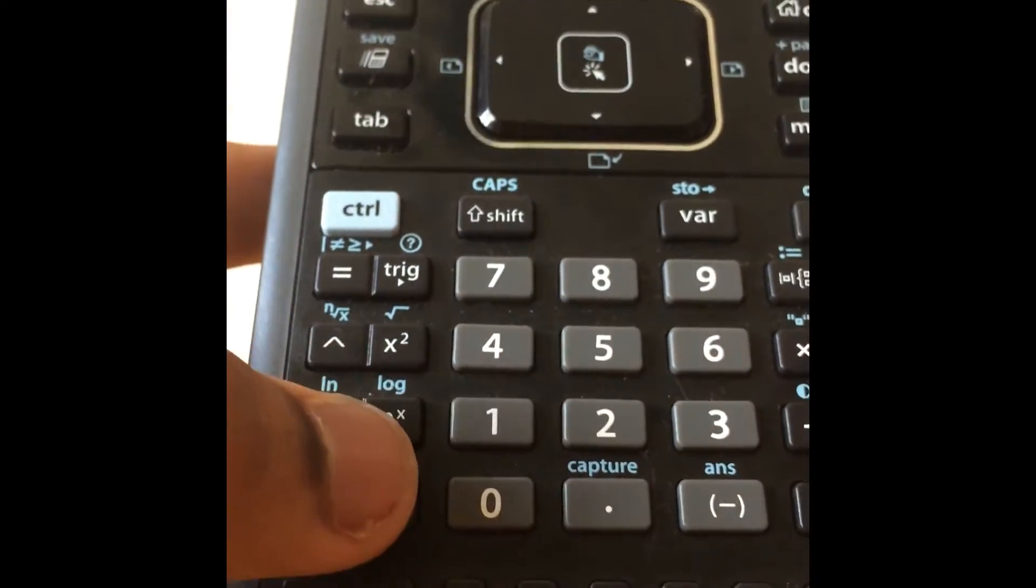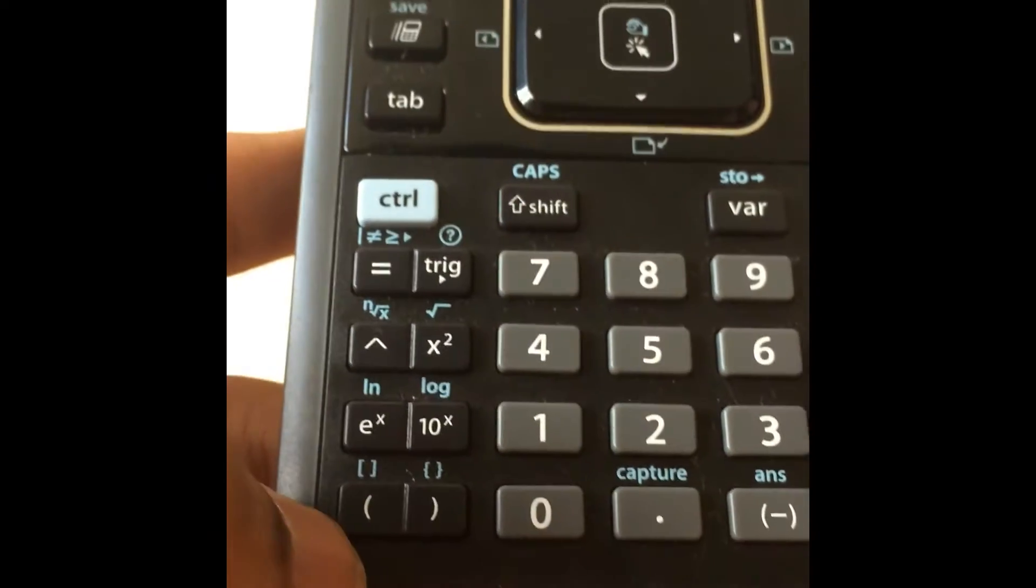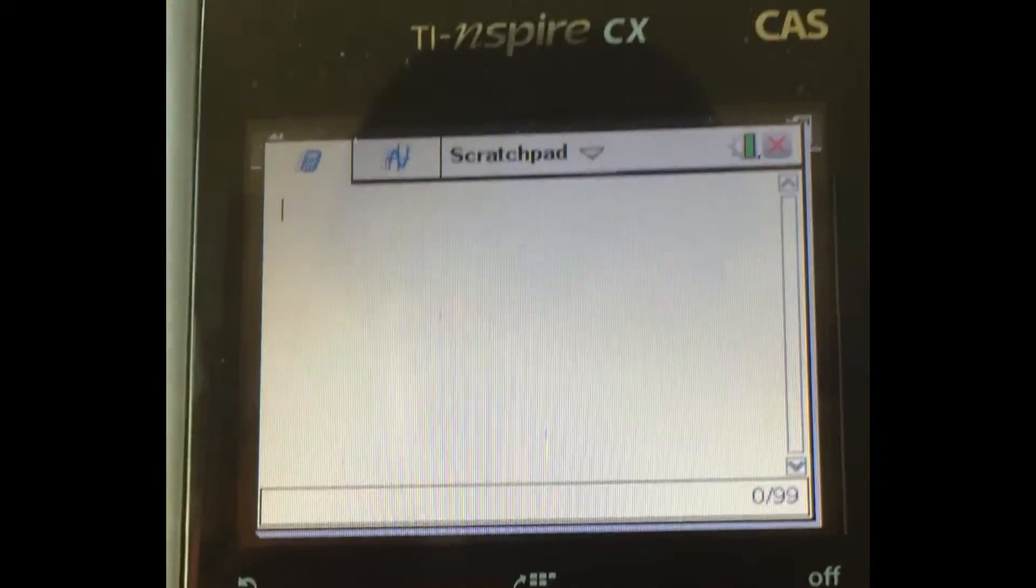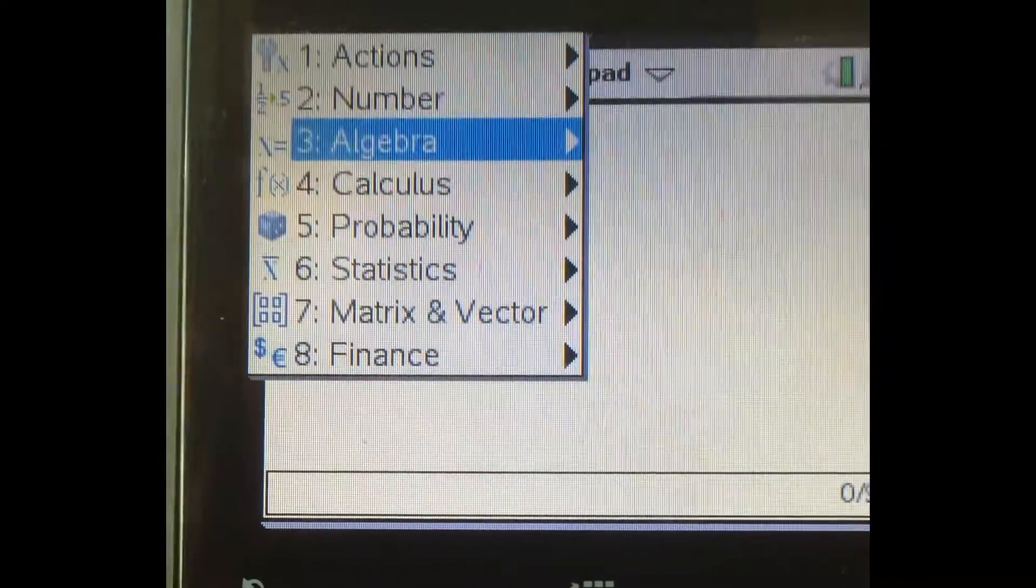There are options for ln, log, e to the x, 10 to the x down here, and brackets of different types which you don't really need. Now moving on to the more advanced operations, they are down here in the menu when you press menu. Most of the things that you're going to be using are under these four categories.